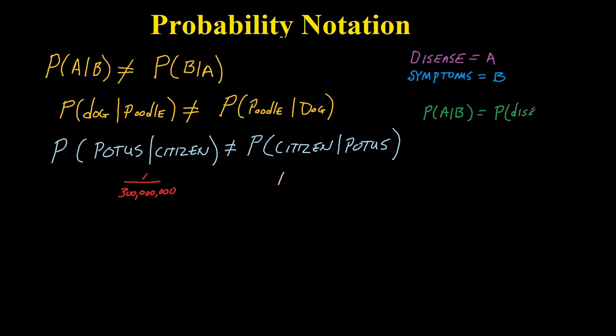So the probability of A given B is the probability of having a disease given the symptoms that you observe or the data that you observe.